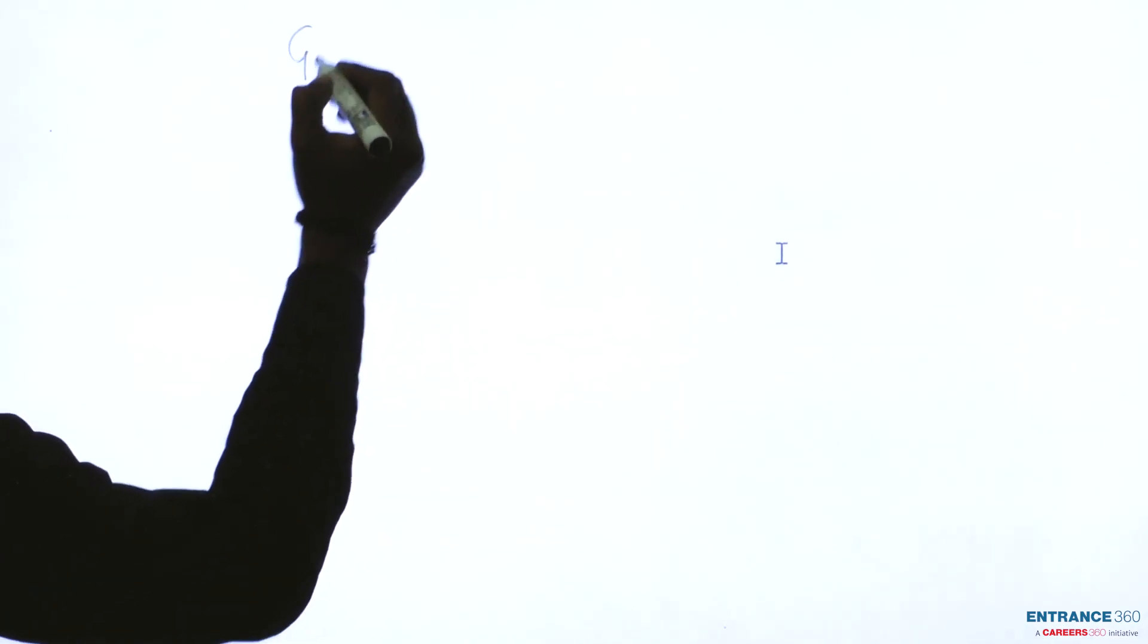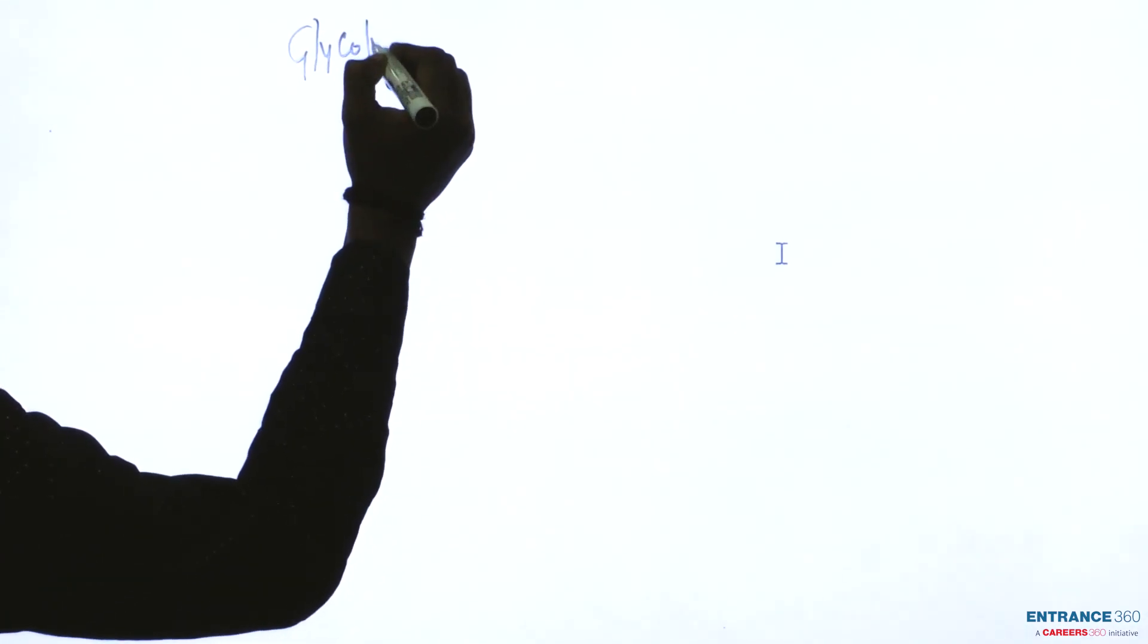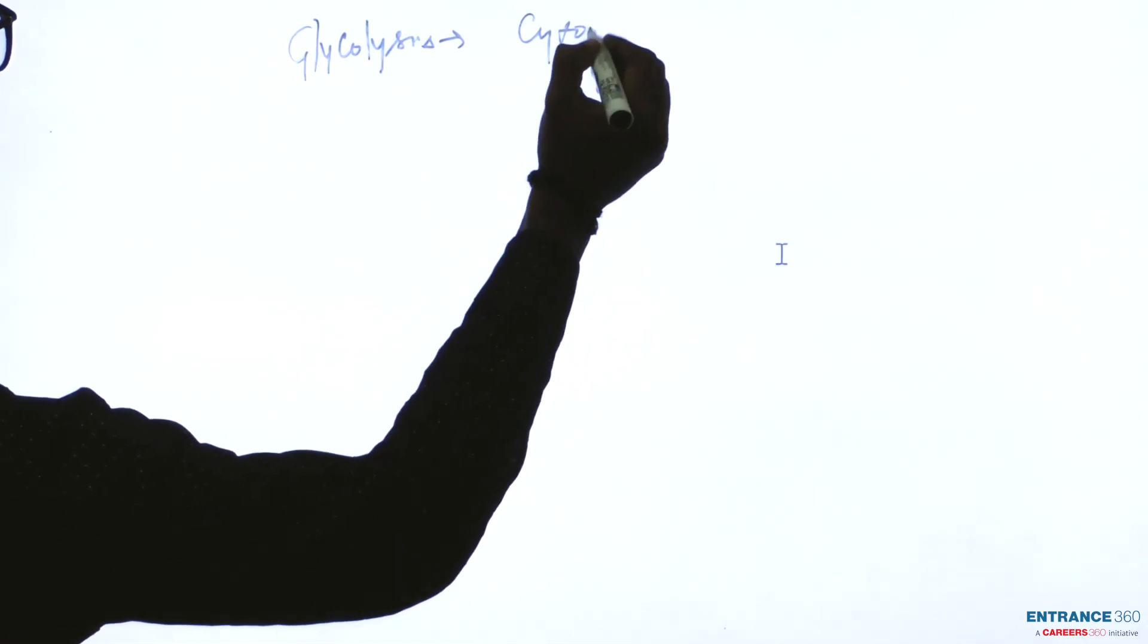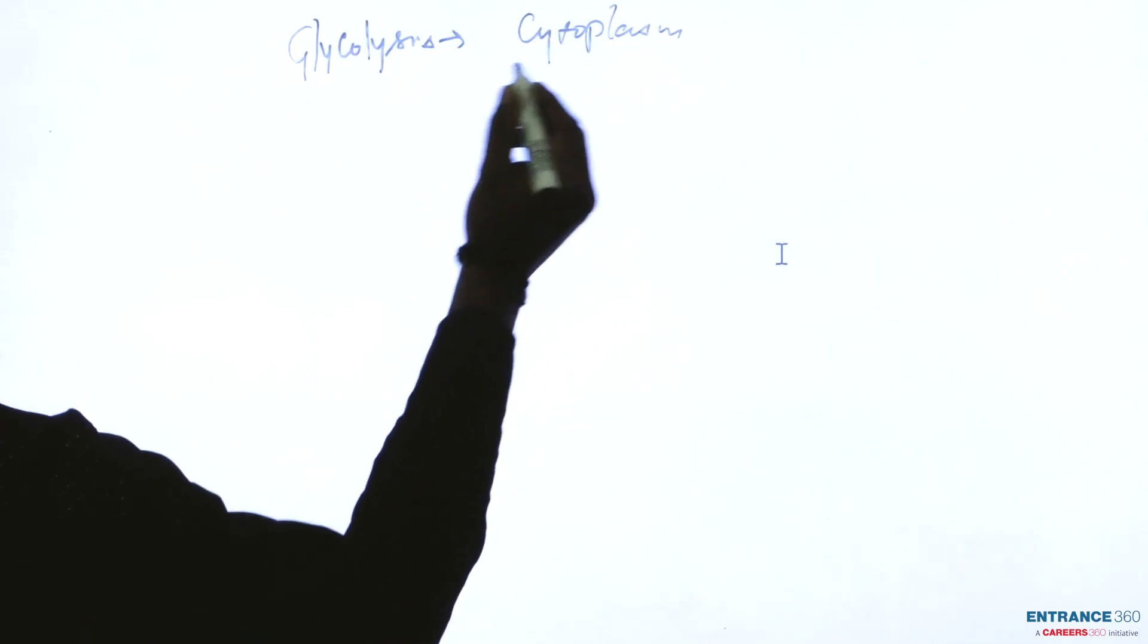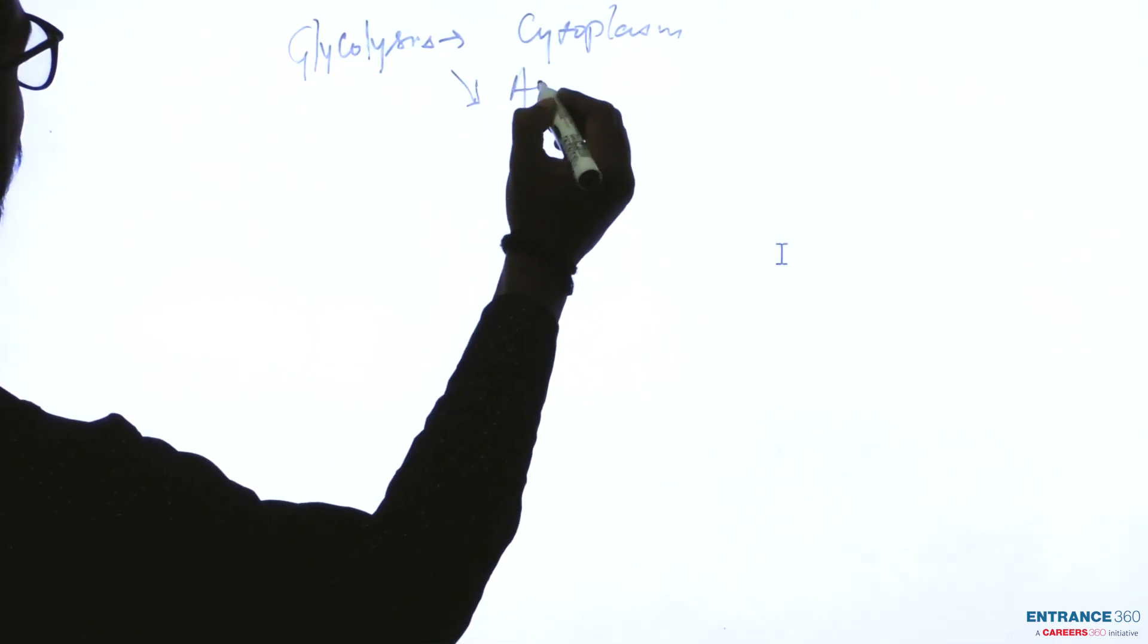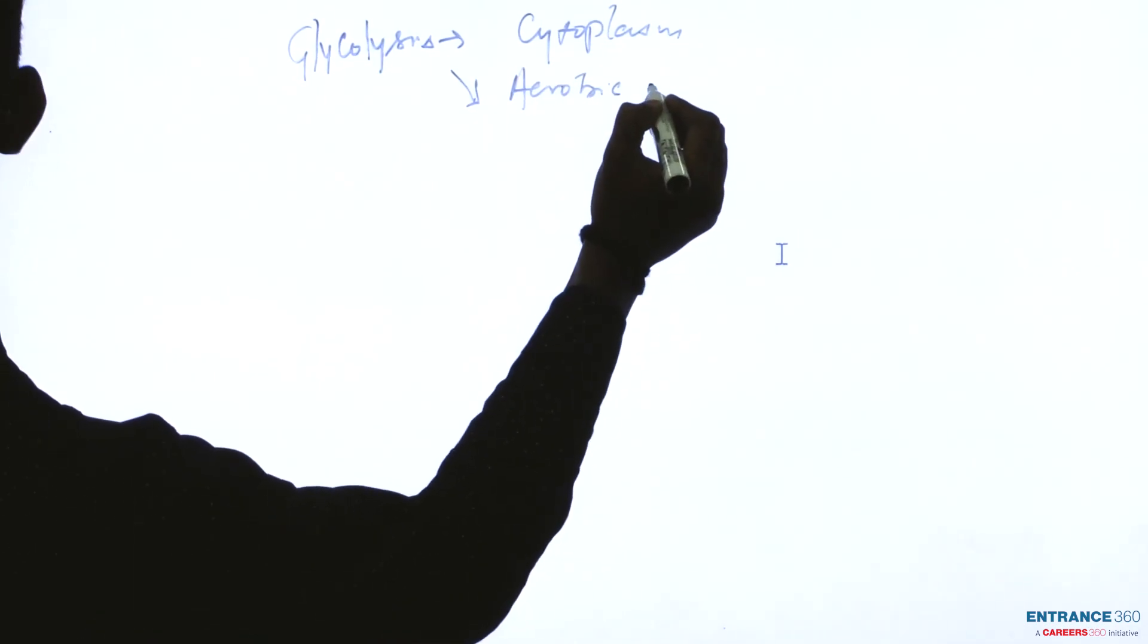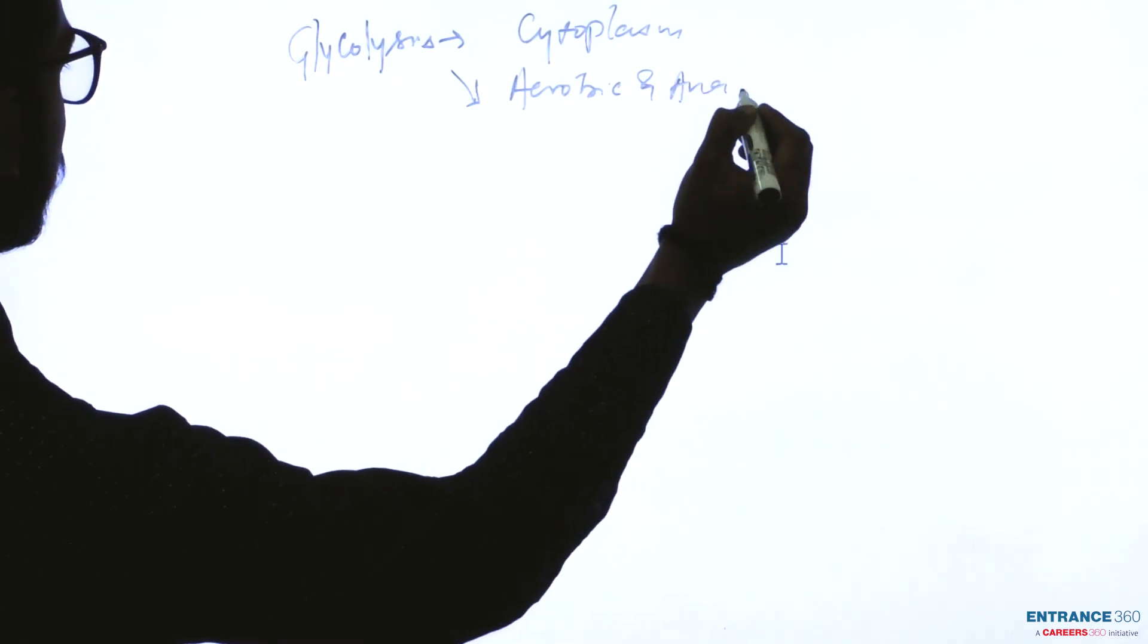So students, as we all know, glycolysis basically occurs in cytoplasm and is common for both aerobic and anaerobic respiration.